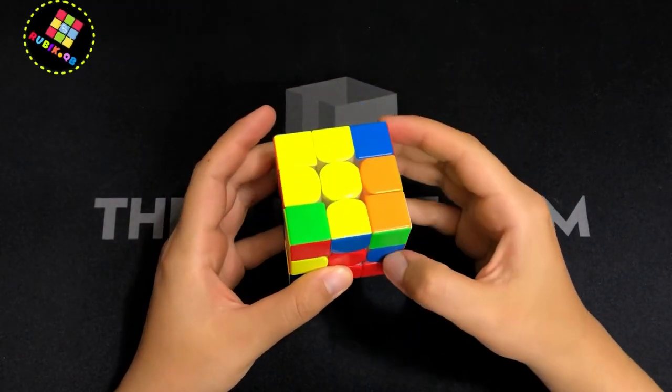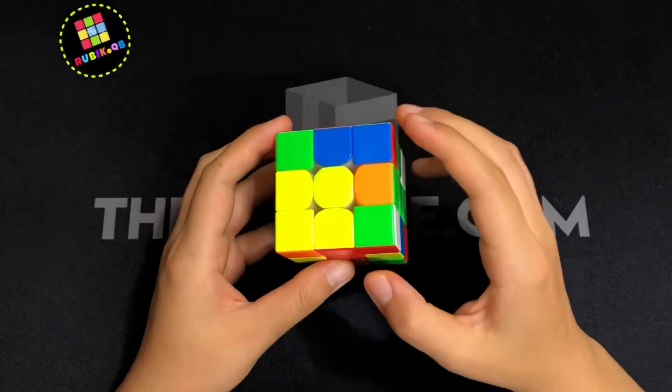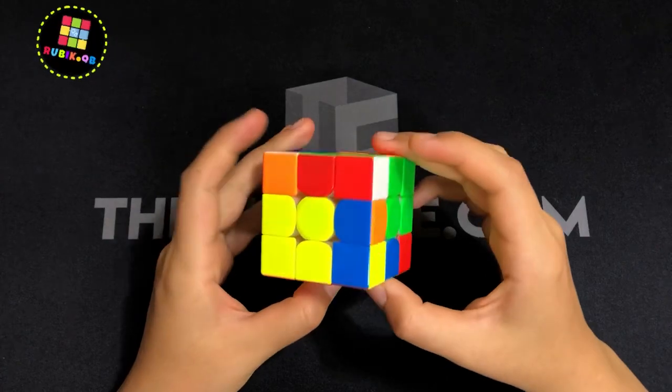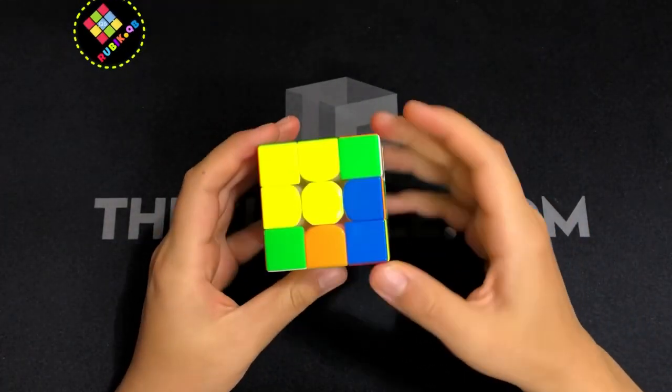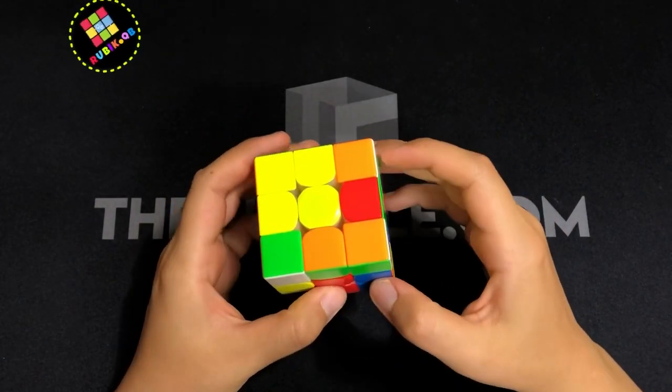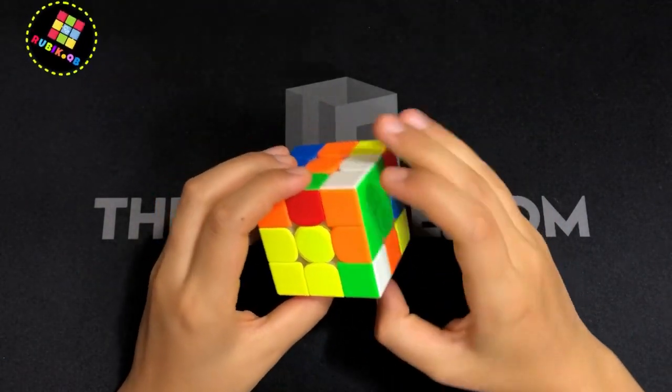Then he separated these two like this and then inserted these two into the back slot. But let's just do it again. As he was inserting this pair into the back slot, he paired up these two as well.